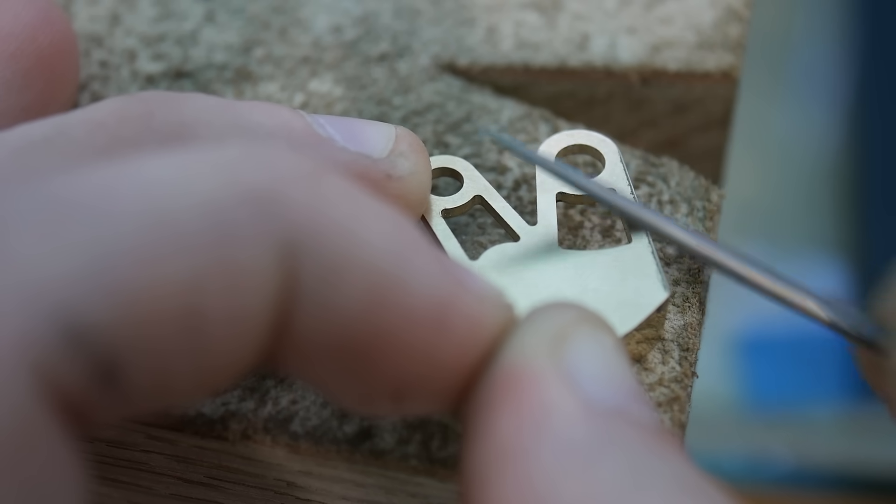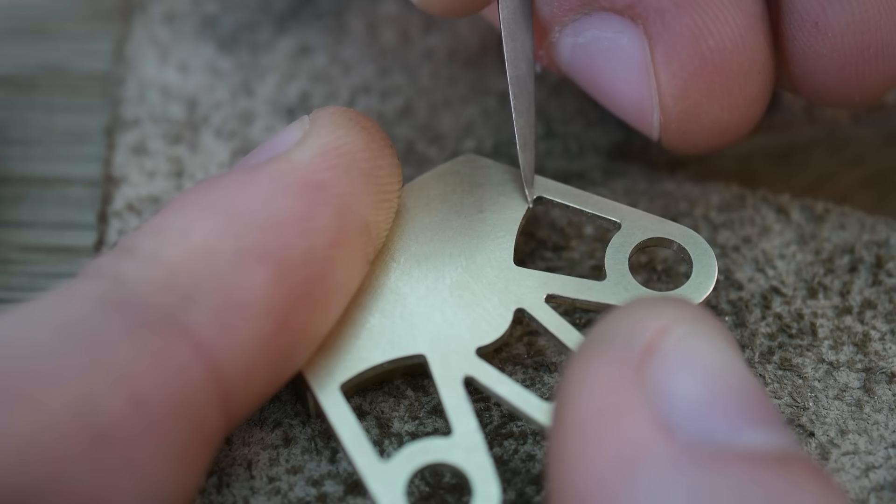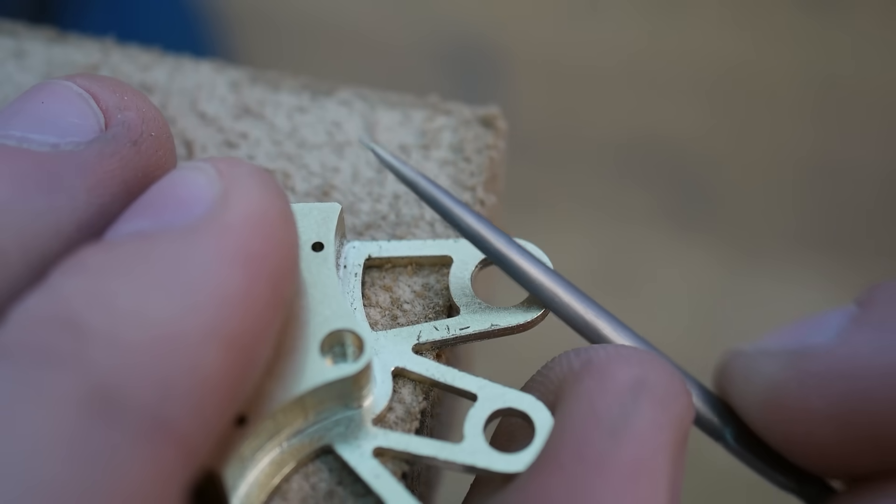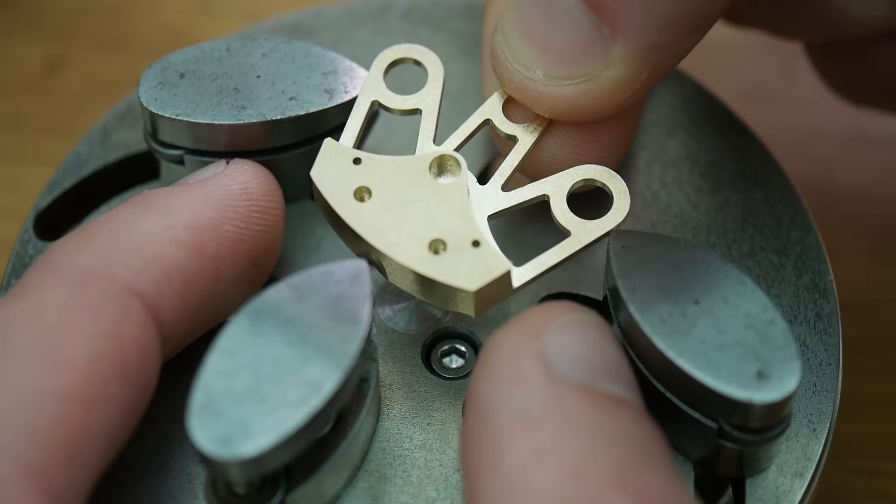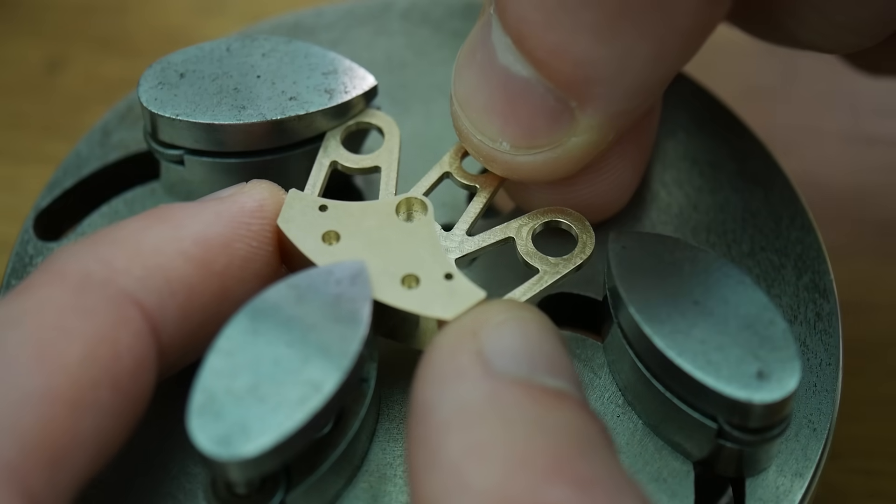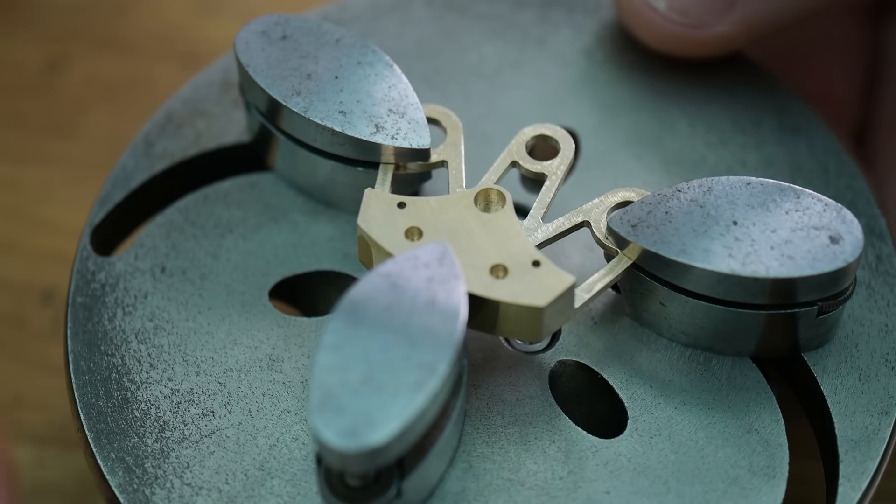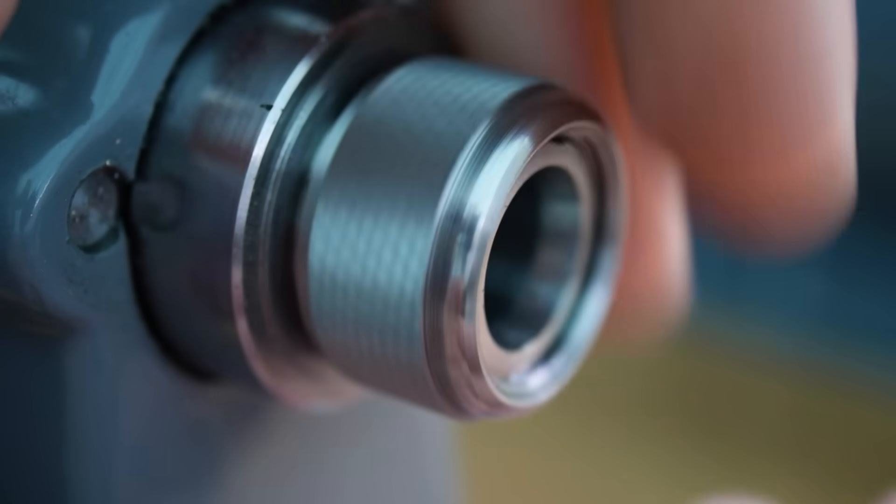Now I began the deburring and beveling process. I might make these bevels larger, but for now I'm keeping them subtle. I wasn't able to make the holes their full depth on the pantograph, so I mount the component on the lathe, and drill and bore them to the final size.